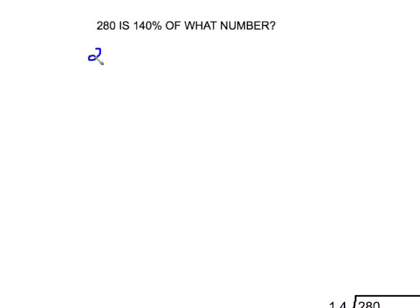Another example of that type. 280. So translate 280. Is, that's my equal sign. 140 percent. It's okay for percents to be greater than 100. Move your decimal over two places to the left. Gives us the decimal 1.40, but really I just need the 1.4. Of what number? One-step equation. Undo by dividing both sides by 1.4.